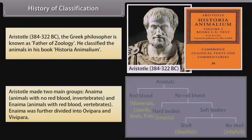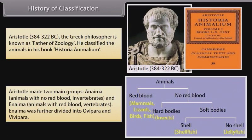Aristotle made two main groups: Anima, animals with no red blood (invertebrates), and Anima, animals with red blood (vertebrates). Anima was further divided into ovipara and vivipara.